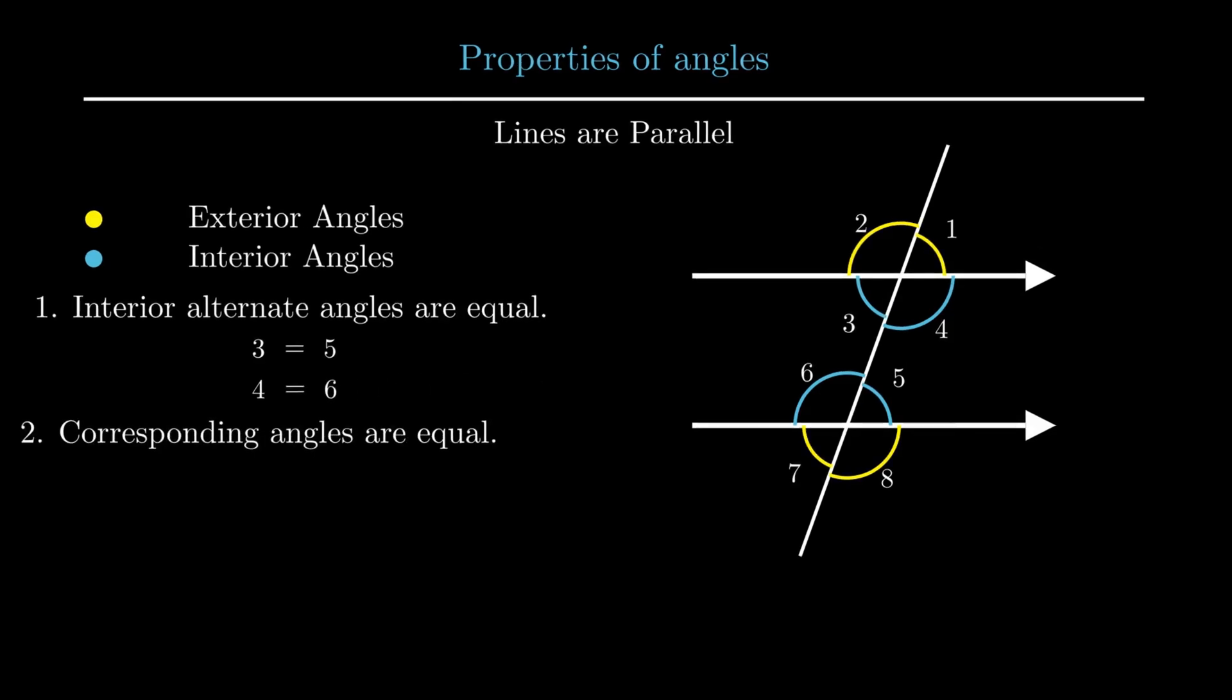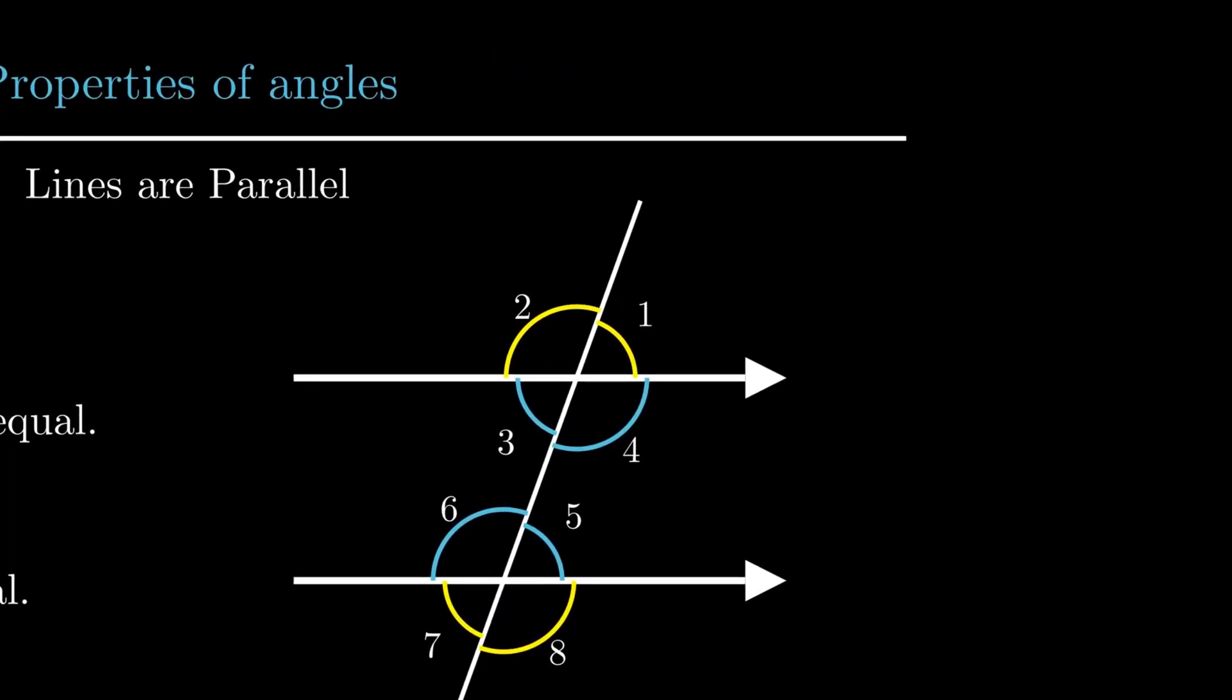Second property states that if lines are parallel, corresponding angles are equal. The word corresponding means sharing the similar position. So from the figure, angle 1 equals angle 5, angle 2 equals angle 6, angle 3 equals angle 7, and angle 4 equals angle 8.